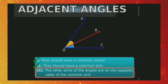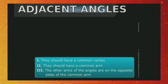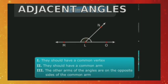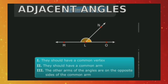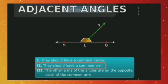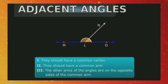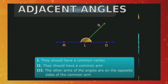The non-common arms OA and OC are on opposite sides of the common arm OB, satisfying the third condition. So we can say that angle AOB and angle BOC are adjacent angles. Let's see one more example: angles MLN and NLO both have a common vertex L, a common arm LN, and their non-common arms ML and LO are on opposite sides of the common arm. So we can say that they are adjacent angles.